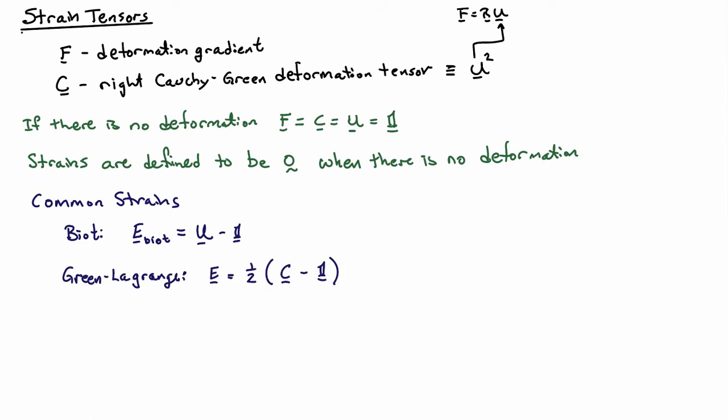Probably the most common strain that one sees in finite deformations is the Green strain or the Green-Lagrange strain, and it's defined to be equal to one-half C minus identity. So again, when there's no deformation, C is equal to the identity, and the Green strain will be equal to zero.